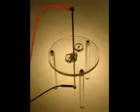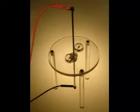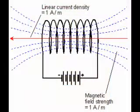The greater the electric current, the stronger the magnetic field produced. The strength of the magnetism can be greatly increased by coiling the wire.